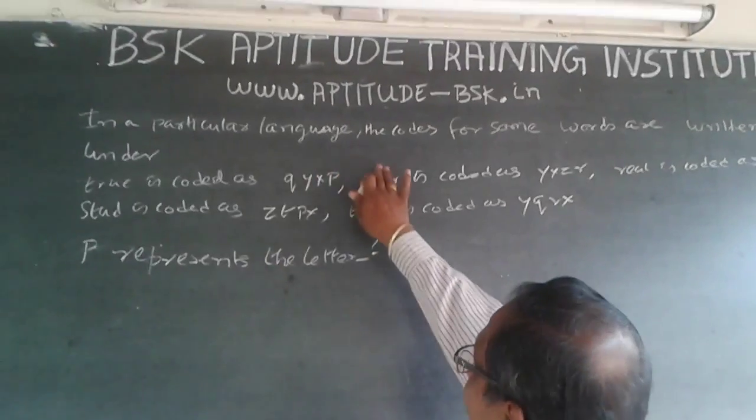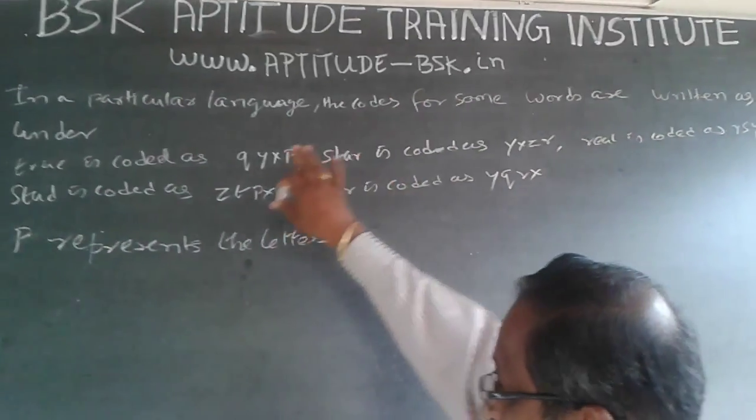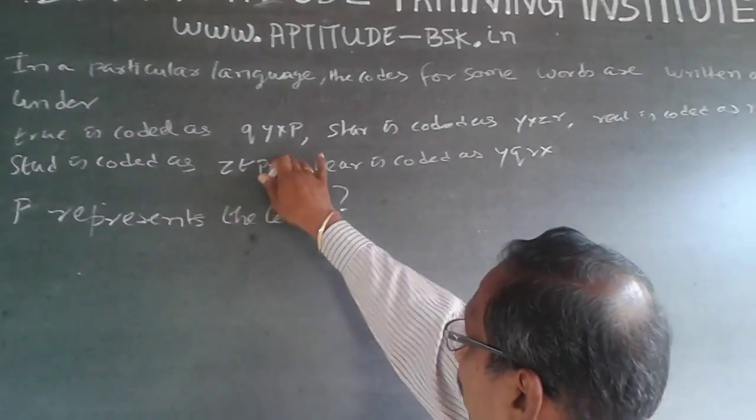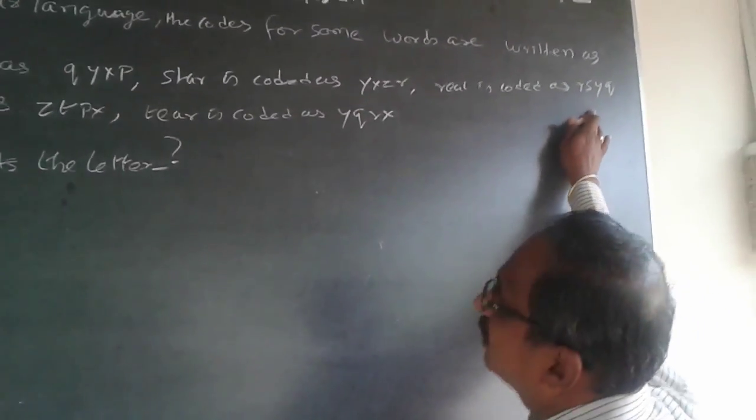The question is: in a particular language, the codes for some words are written as under. TRUE is coded as QYXP, STAR is coded as YXZR, and REAL is coded as RSYQ.